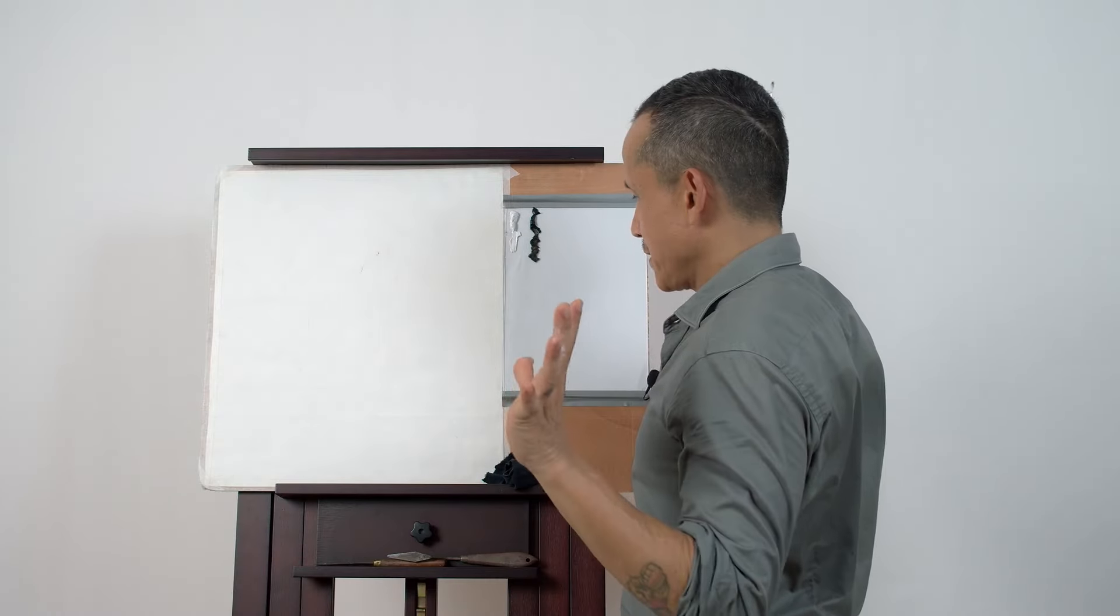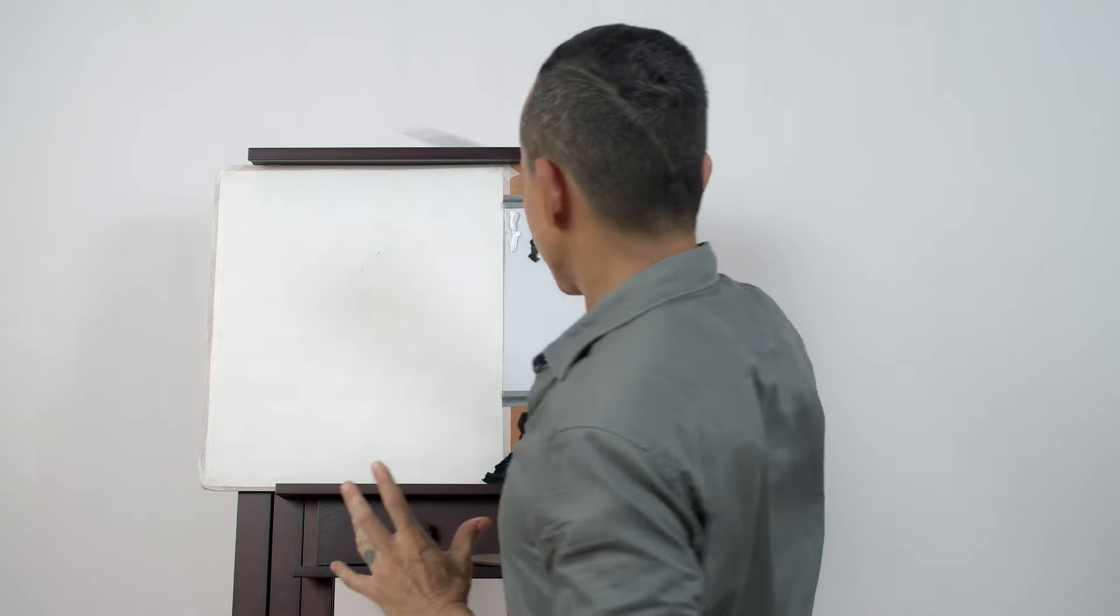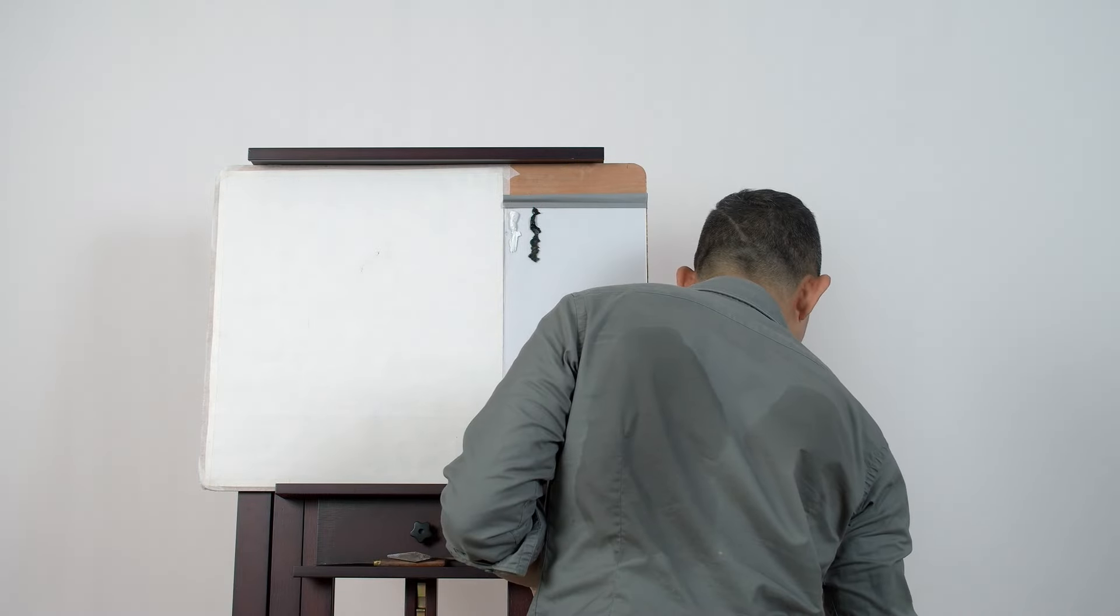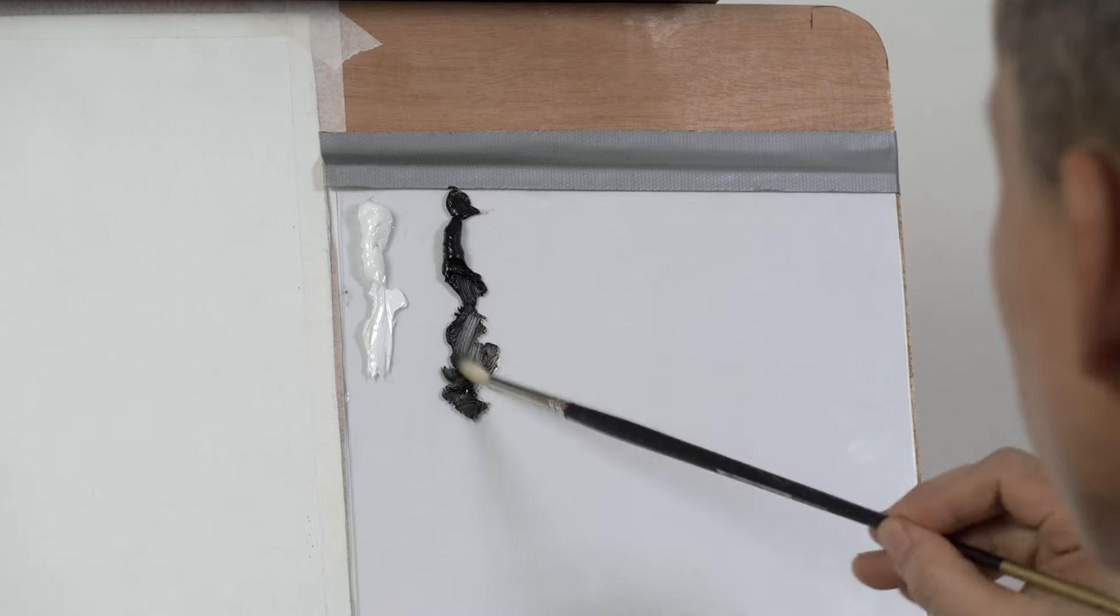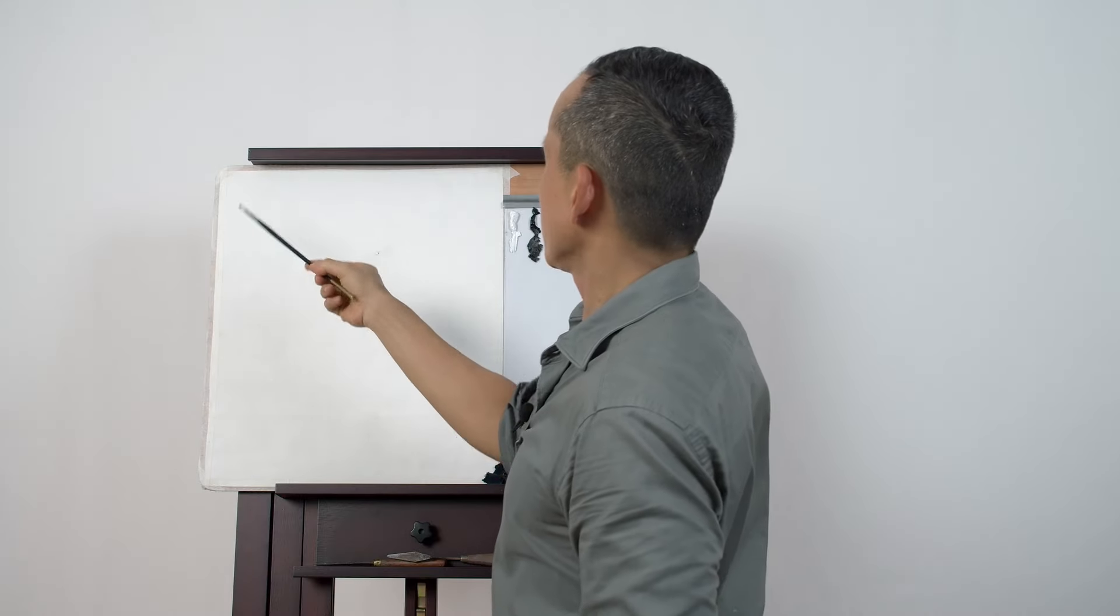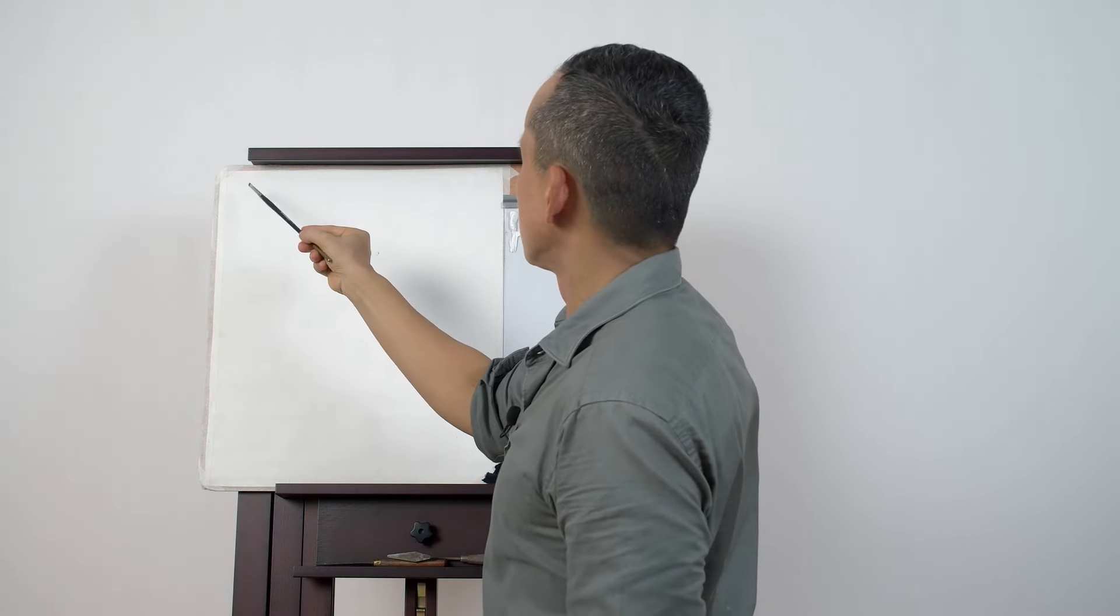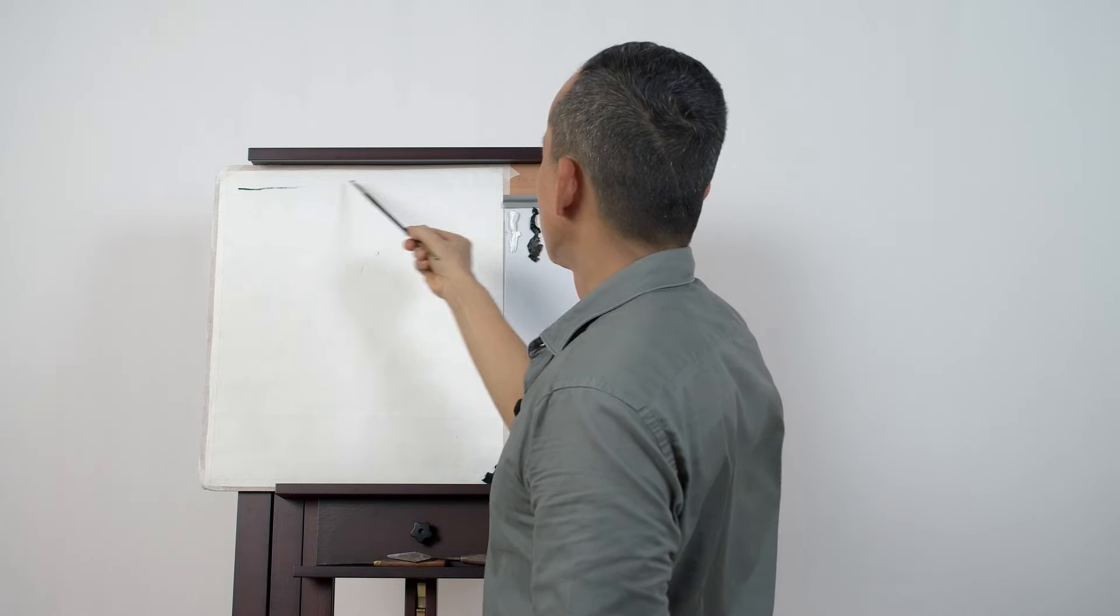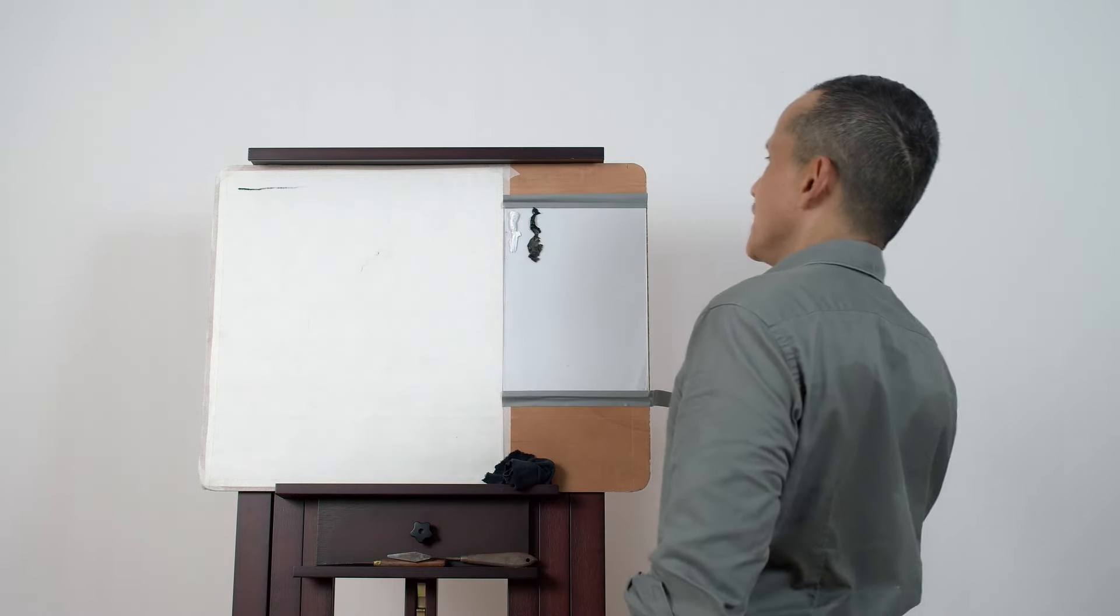All right. So now I got my fancy grip. I got my fancy technique. Let's give it a try. Let's make our first mark. I got a round brush here. I got a little bit of walnut oil in my thing. And let's see. Voila. So that's pretty much the mark we make.